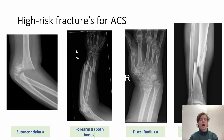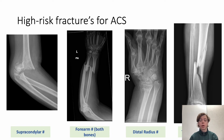These are some high-risk fractures for acute compartment syndrome. These include the supracondylar paediatric humeral fracture, forearm fracture of both bones, distal radius fracture, and tibial diaphyseal fracture — which is the most common fracture leading to acute compartment syndrome in adults.